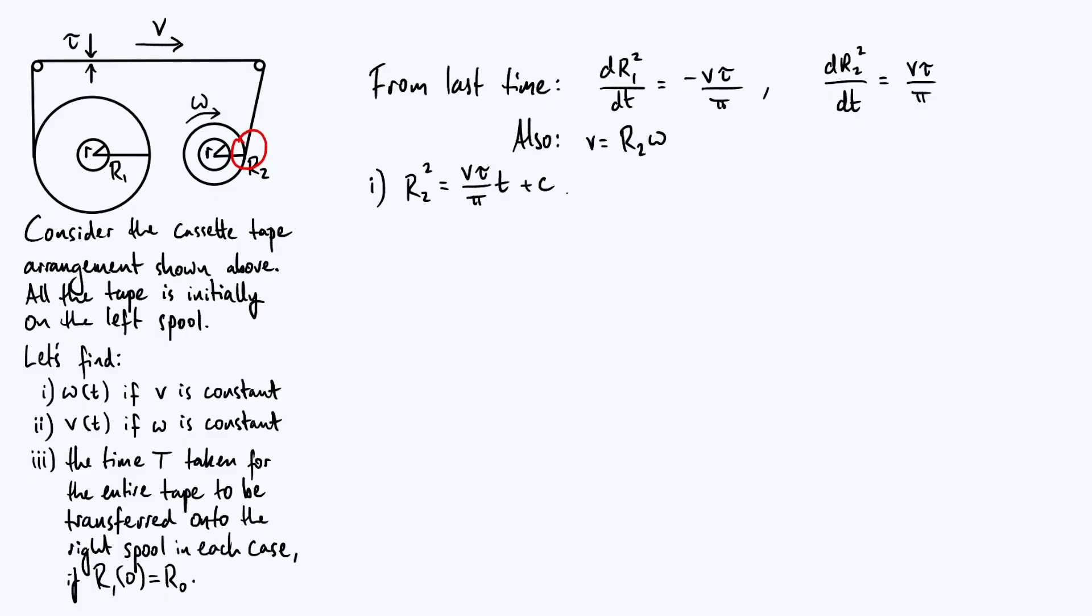To fix the constant, you need to apply the initial condition. What do we know about R2 when time equals zero? Well, initially all the tape is on the left spool. So if all the tape is on the left spool, there's no tape on the right spool, and therefore the radius of the right spool is just the inner radius, lowercase r. There's no extra thickness added by the tape. So R2 at time zero equals lowercase r. Substitute time zero, R2 is small r, and you get C equals small r squared.